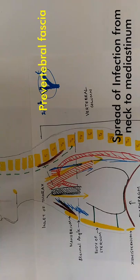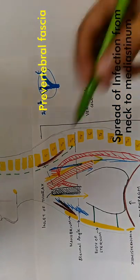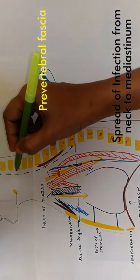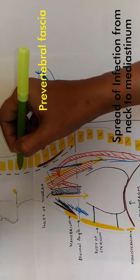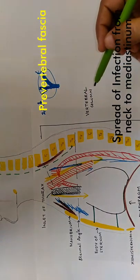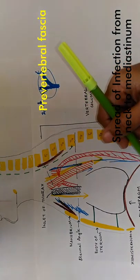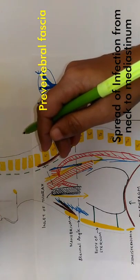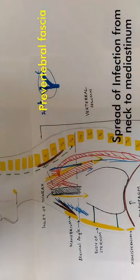An infection present in the neck behind this fascia can pass down into the superior mediastinum. An infection in the neck behind the pre-vertebral fascia can extend down to the superior mediastinum, but not lower. So an infection occurring in the neck can spread up to the superior mediastinum when it is just behind the pre-vertebral layer.